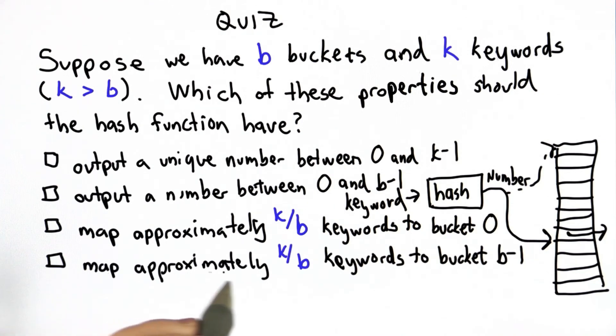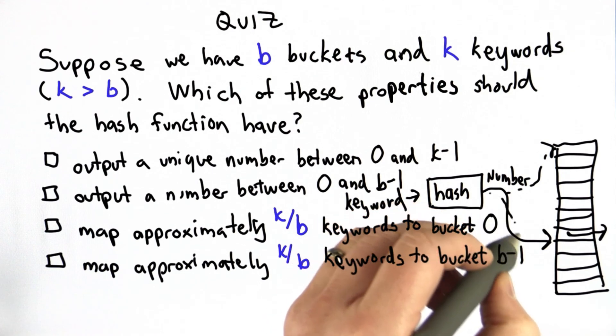So the fourth choice is map approximately k divided by b of the keywords to bucket b-1, that's the last bucket.